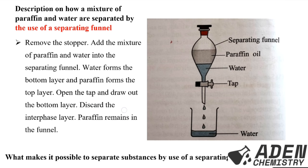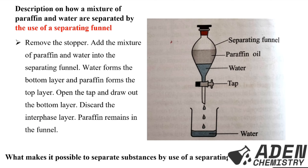Then discard the interface layer. The interface layer is where paraffin and water make contact — that region is the intermediate layer. It is very hard for the two liquids to be separated at the interface. After discarding the interface layer, what remains in the separating funnel will be the paraffin oil.